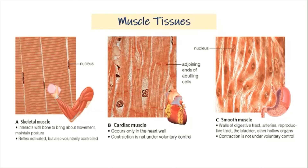For the cardiac muscle, it can only be found in the heart wall. The contraction is not under voluntary control — you cannot control the beating of your heart. The smooth muscle is also involuntary and is found in the walls of the digestive tract, the arteries, the reproductive tract, the bladder, and other hollow organs.